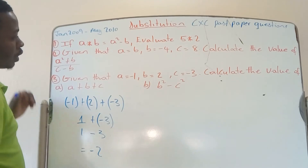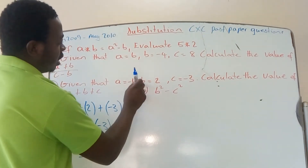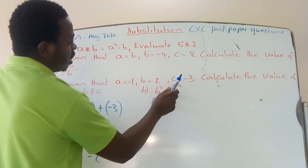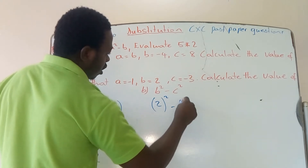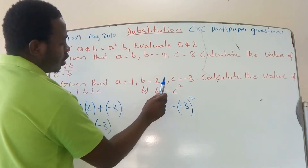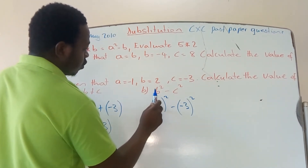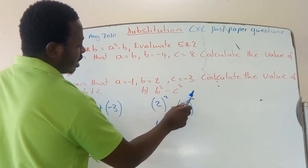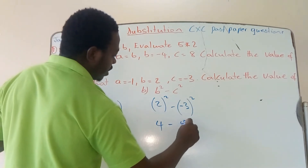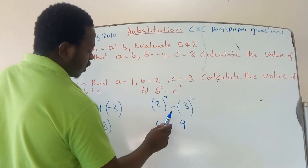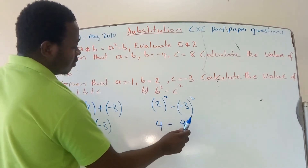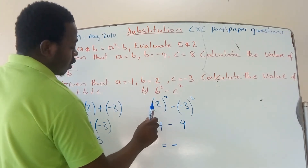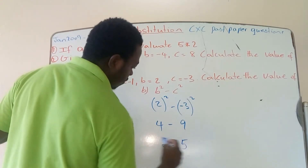For part b, b² - c²: b is 2, so that's (2)² minus c. C is -3, so that's minus (-3)². 2 squared is 4. (-3) squared is positive 9. So we have 4 - 9. The signs are different, so we subtract and keep the sign of the larger number, giving a final answer of negative 5.